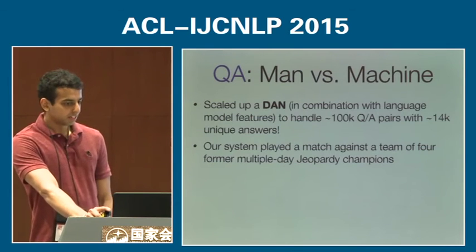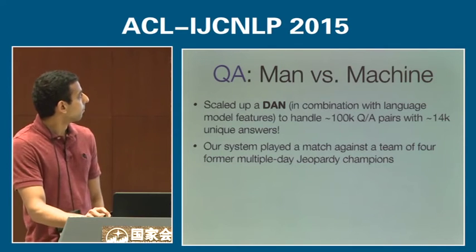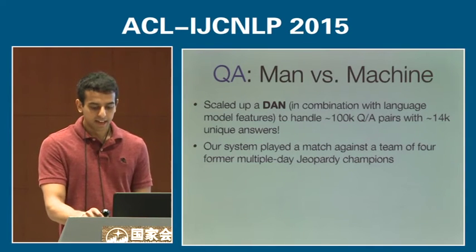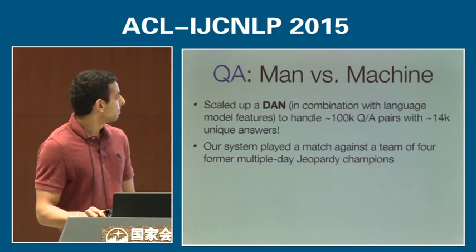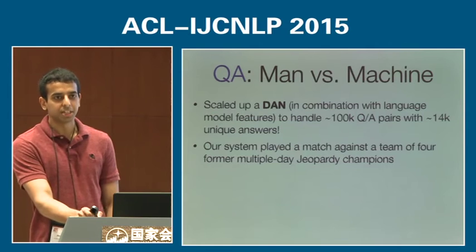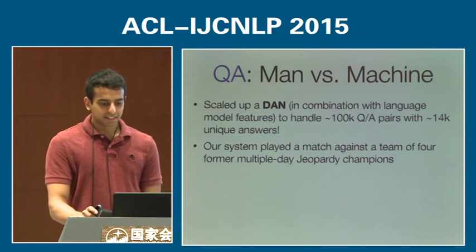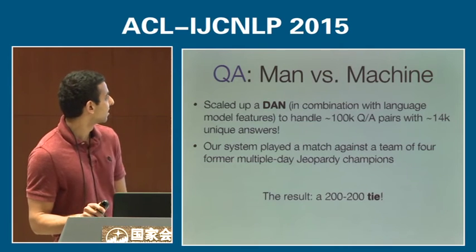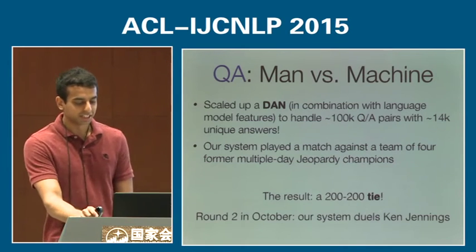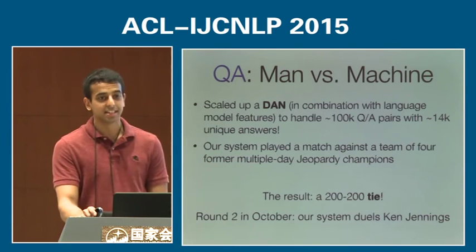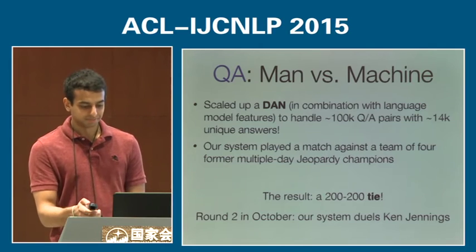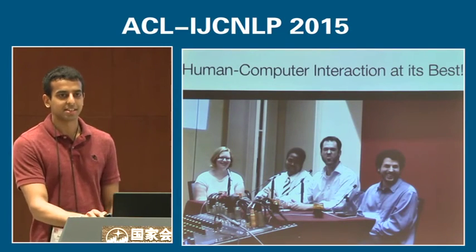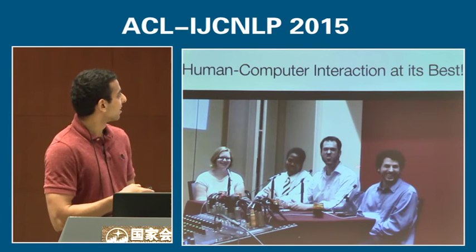Since publication of this paper, we've scaled up the DAN with some language models to handle a much bigger dataset of around 100,000 question-answer pairs and 14,000 unique answers. We had a match against a team of four former multiple-day Jeopardy champions versus our system — the result was inconclusive; we tied 200 to 200. We were winning the entire match and then the humans made a run towards the end. Round two in October, our system will go against Ken Jennings to truly determine who is better at Quiz Bowl — man or machine.